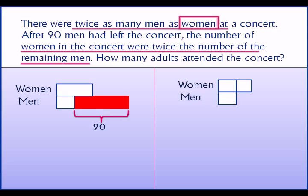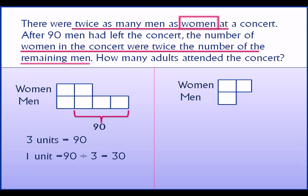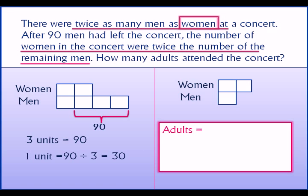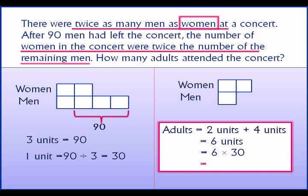We can see that the number of men who left the concert is 90. To adjust to the new unit size, there were two units for women and four units of men at the concert. From the diagram, three units is equal to 90, so one unit is equal to 90 divided by 3, which is 30. Adults is two units plus four units, which is six units, and six times 30 is equal to 180 adults attended the concert.